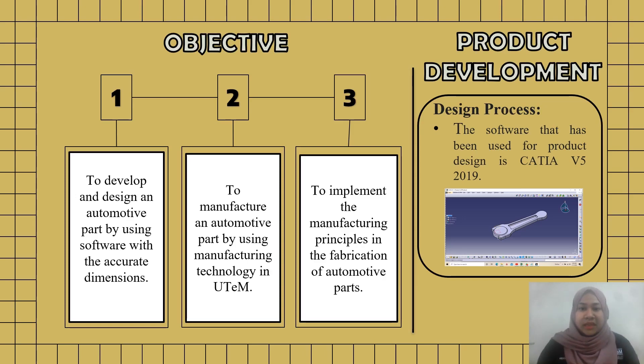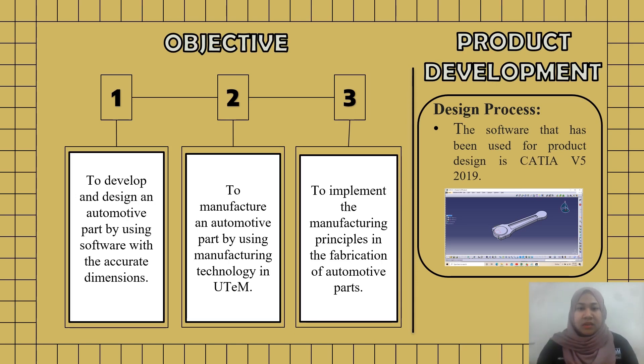In the design process, the software used for product design is CATIA V5 2019. The figure shows the model of the Connecting Rod in CATIA.